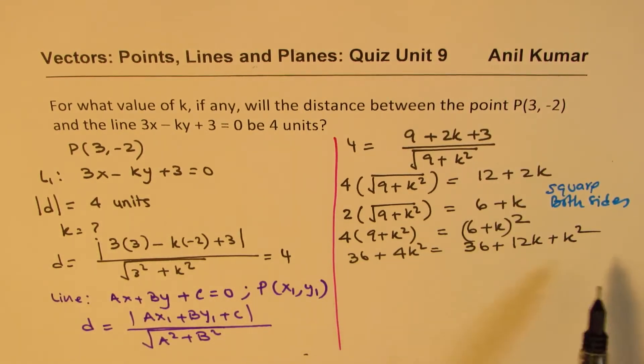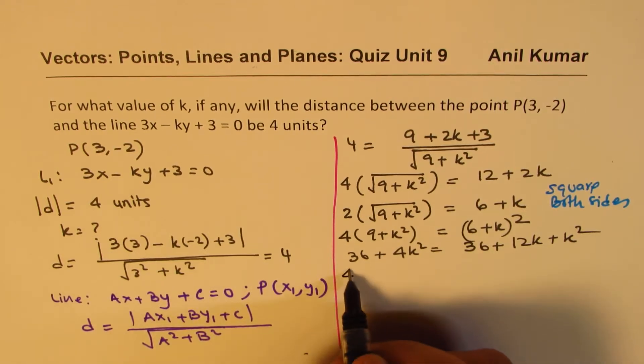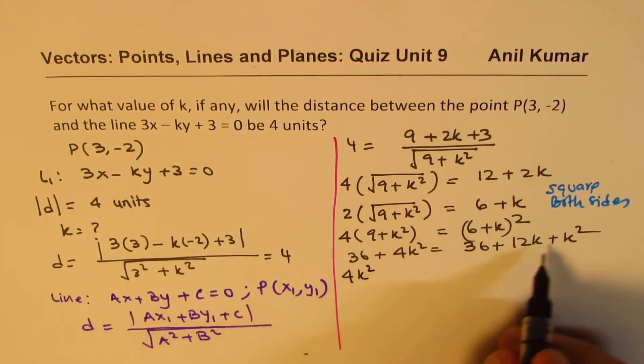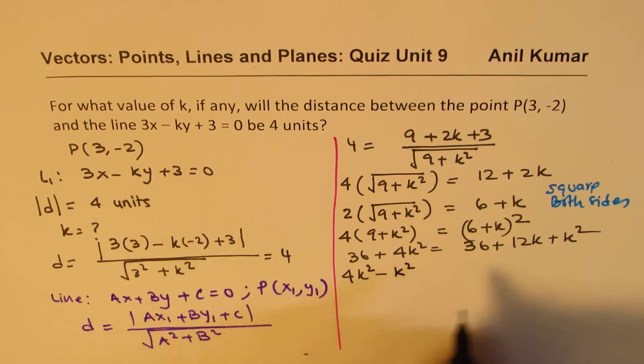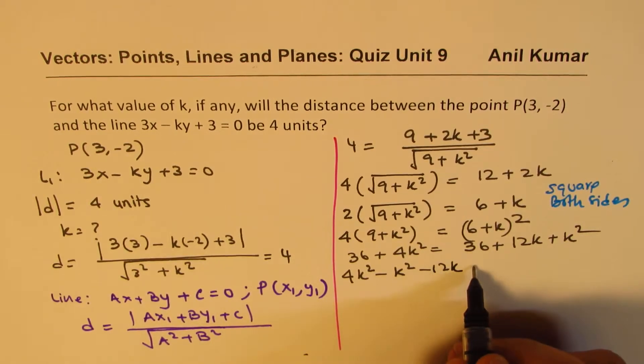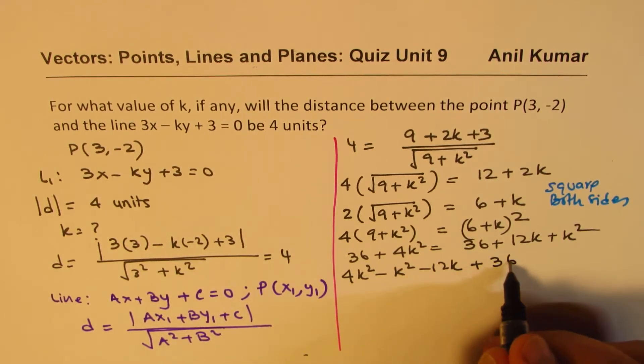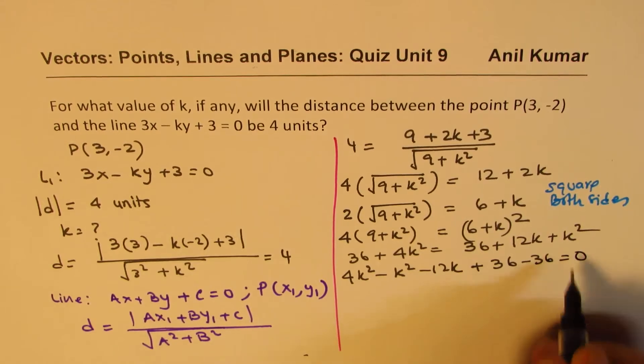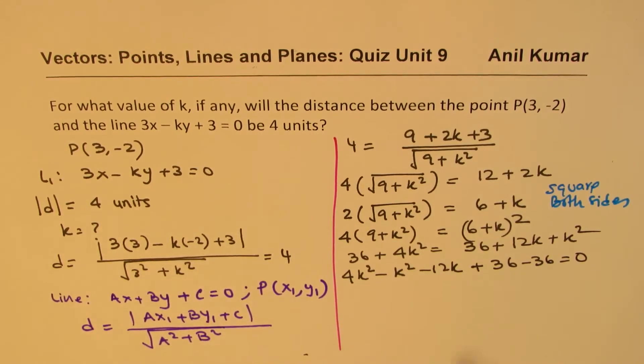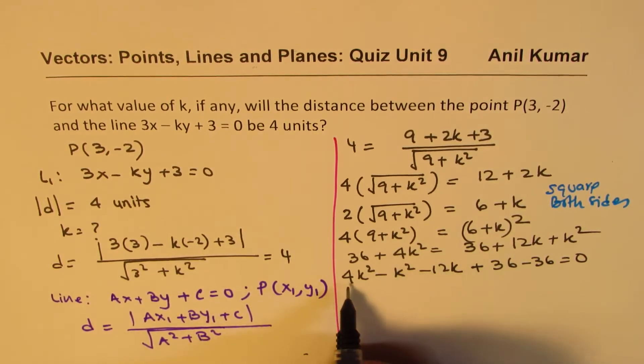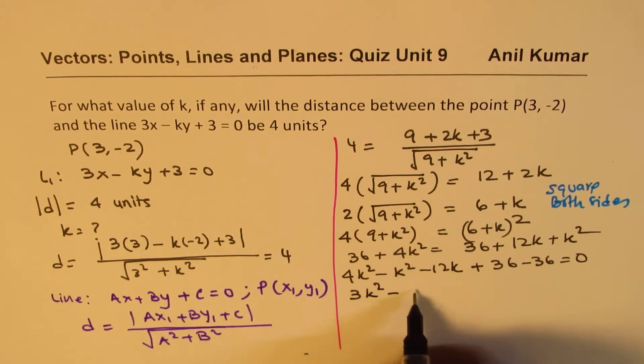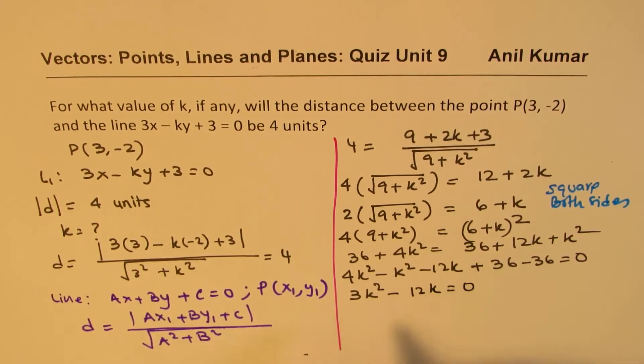Now we can bring the terms together, so we'll keep them on the left side. 4k² - k² - 12k, plus 36 and minus 36 cancel. So what we get here is 3k² - 12k = 0.